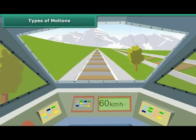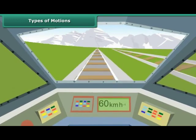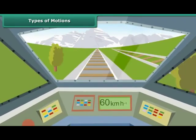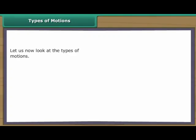Types of Motions. As you know, motion is the change in position of an object with time. The change in its position can be determined through distance measurements. Let us look at the types of motions.